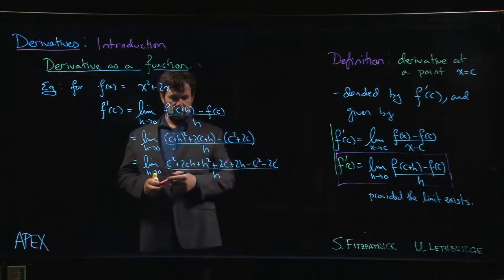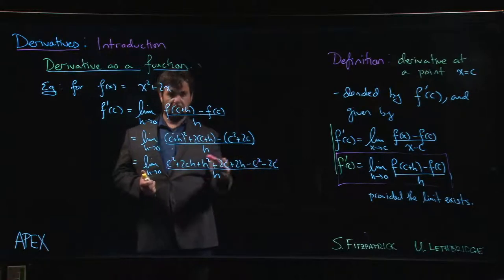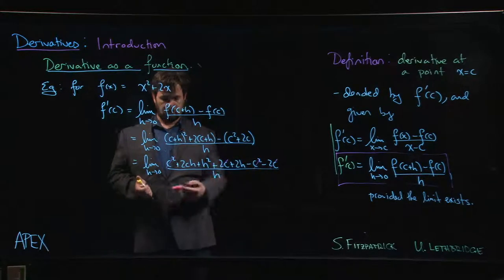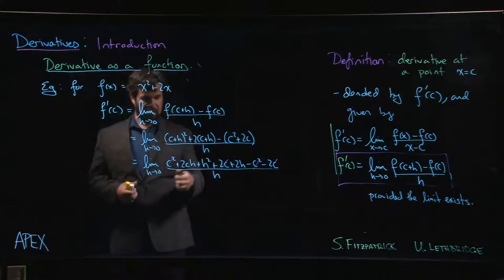2c minus 2c cancels. Again, the stuff in the numerator that doesn't depend on h, it's gone. It cancels out because we know this was supposed to be a 0 over 0 limit. So the numerator, everything has to be a multiple of h, because we want it to go to 0 when h goes to 0. So it's all gone. Everything else has an h in it.